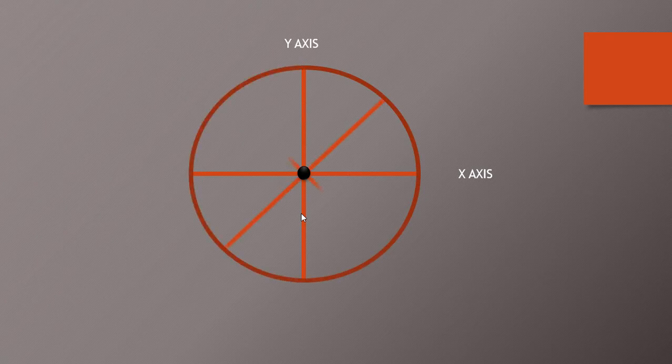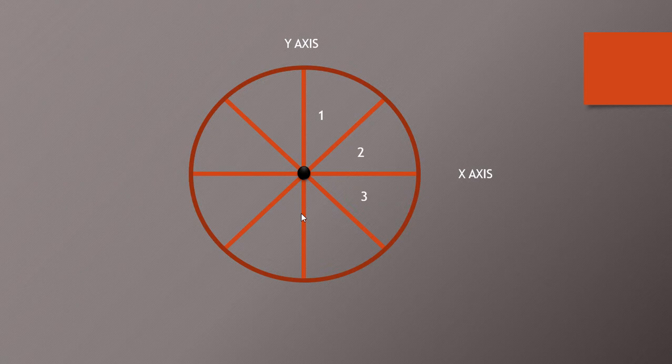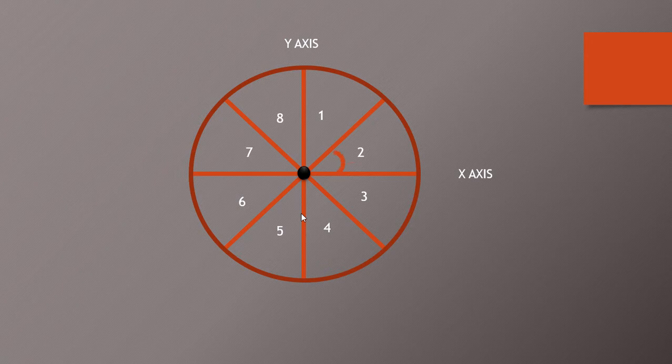This is the center of that circle in which we have made X and Y axis. Now we have drawn our circle. We have divided our circle into 8 parts: 1, 2, 3, 4, 5, 6, 7, and 8, each of having angle 45 degree.